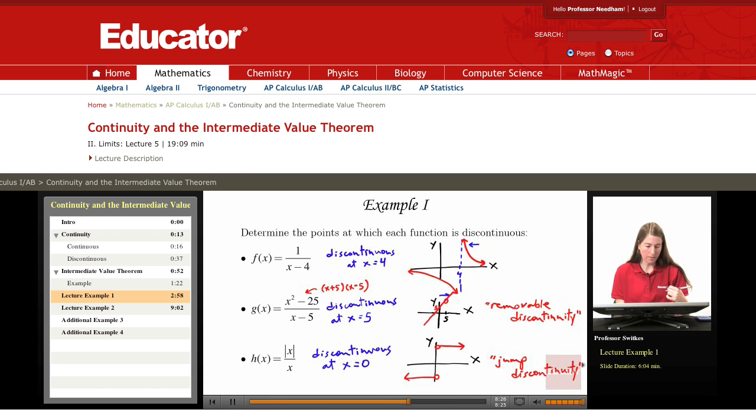So those are three examples of three different types of discontinuities. All three of these examples had discontinuities due to division by 0.